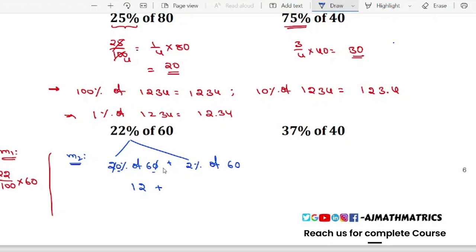What is 1% of 60? 100% of 60 is 60 itself, 10% of 60 is 6, so 1% of 60 is 0.6. Put the decimal after two digits. Now 2% is 2 into 0.6, which equals 1.2.